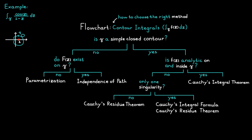In our next example I will show you how to use the flowchart when dealing with loops. Remember that loops are just a union of simple closed contours, so we can simply split the contour up into two parts, and rewrite our contour integral accordingly.